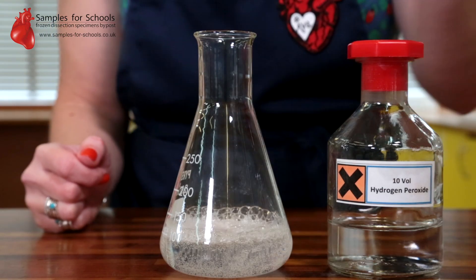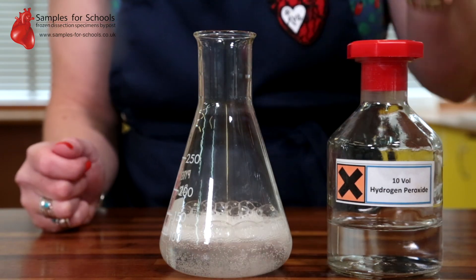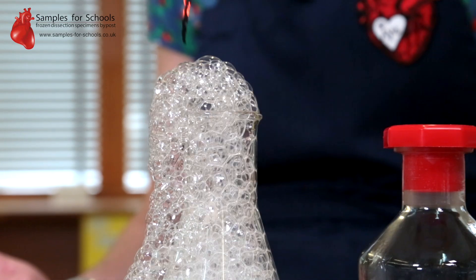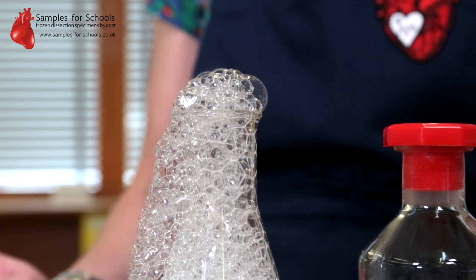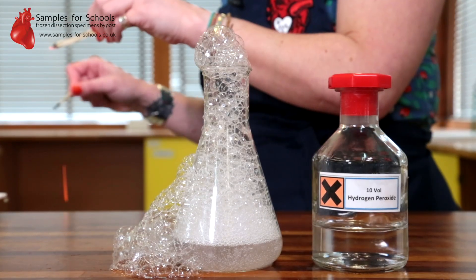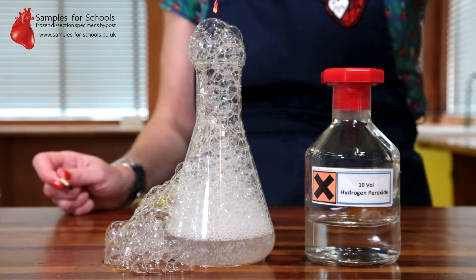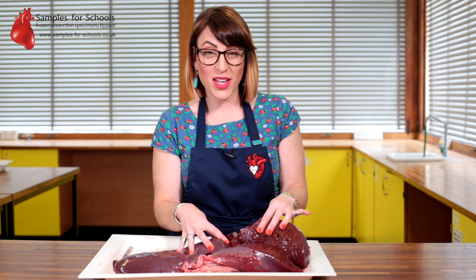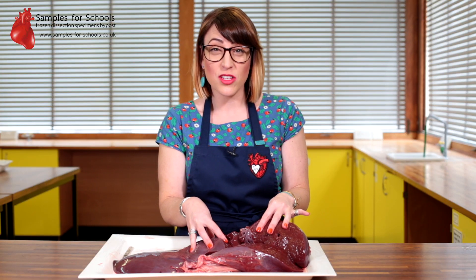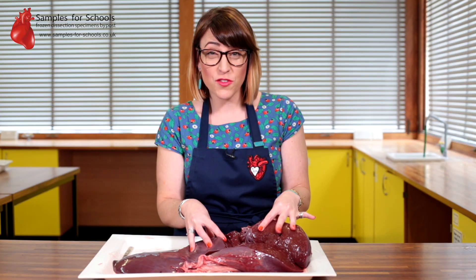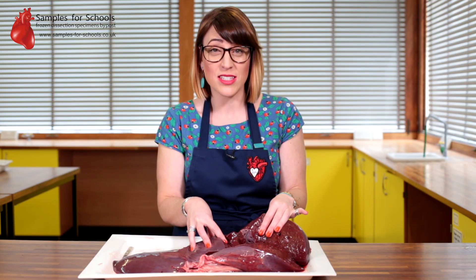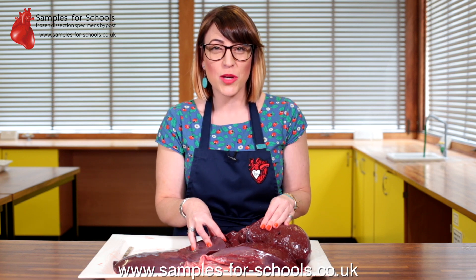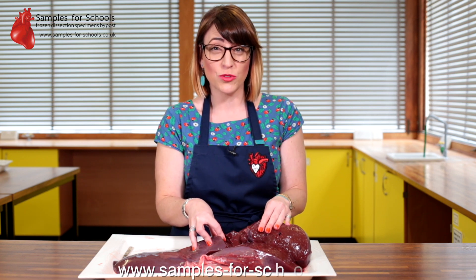You'll notice the chemical reaction is producing a bubbly foam. We can demonstrate this as oxygen by using the glowing splint technique — I can light a splint, blow it out, and the oxygen relights it. Aside from bile production and detoxification, the liver has over 500 functions. For more information on lesson ideas, lesson plans and risk assessments, please see our website at www.samplesforschool.co.uk.